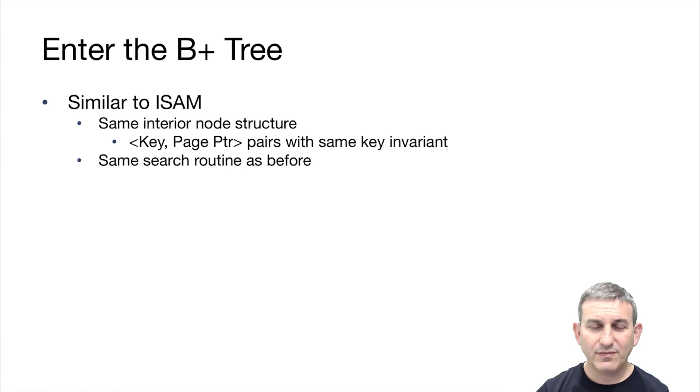B-plus trees. Up to now we've been looking at ISAM, which is a dated and not very useful data structure. Now let's look at the B-plus tree, which is a successor to ISAM that's quite a bit more useful.